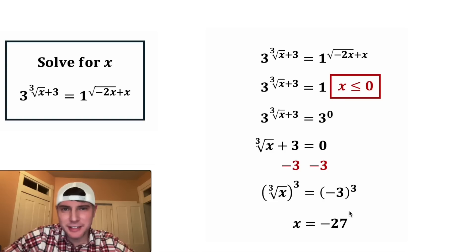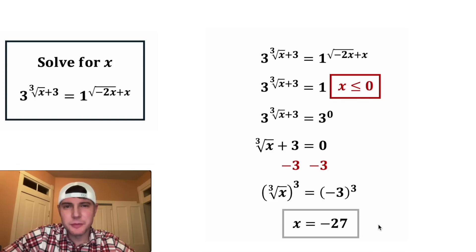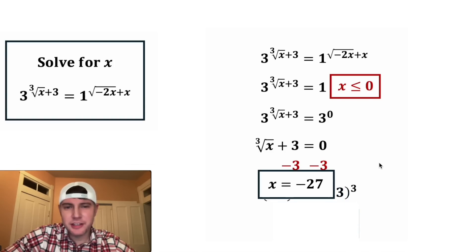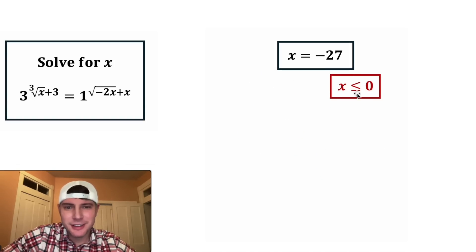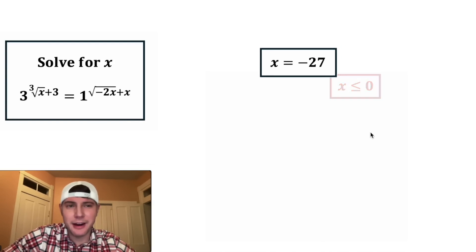And that is the answer to our question, x is equal to negative 27. Let's put a box around it. And we should check this against our domain restriction. The restriction is that x has to be less than or equal to 0. This is true. So we meet this restriction. How exciting.